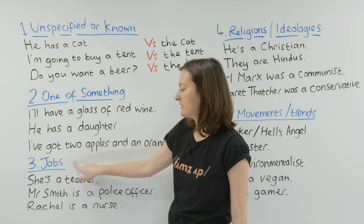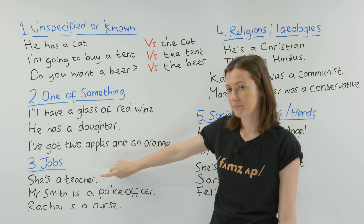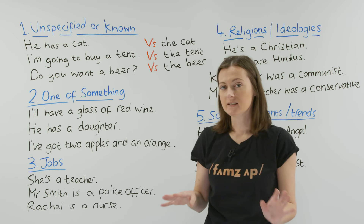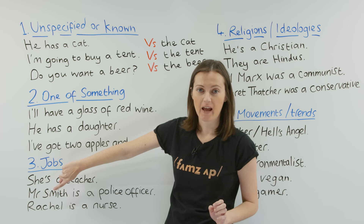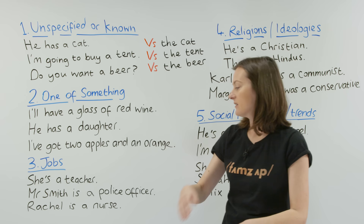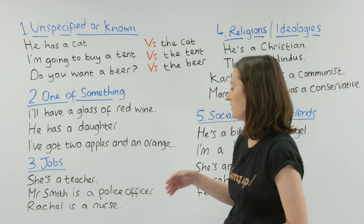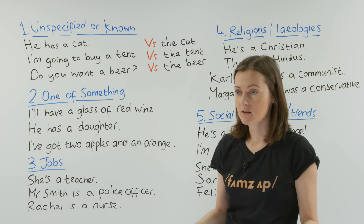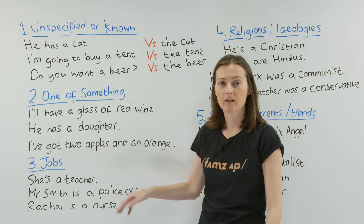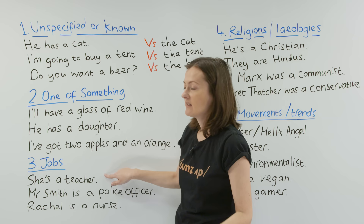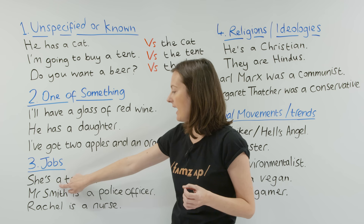Moving on — looking at jobs now. We say 'she's a teacher', 'Mr. Smith is a police officer', and 'Rachel is a nurse'. These sentences are wrong if you remove the 'a': 'She's teacher' — wrong. 'Mr. Smith is police officer' — wrong. 'Rachel is nurse' — wrong. Depending on your native language, if you don't use articles — for example, in Polish or Arabic — many people speaking English, especially at intermediate level, do not use 'a' in their sentences. So it's a very common mistake.